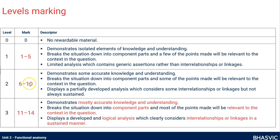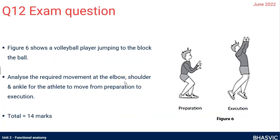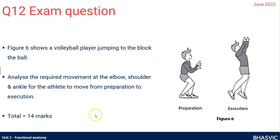Once they've decided what level you're in, they'll determine whether you're at the lower or upper end of that level and give you a grade. Here's an example question: figure six shows a volleyball player jumping to block the ball. On the left they're in the preparatory position on the ground, and on the right they've moved into execution, jumping up to block — arms and legs have changed position. The question says: analyse the required movement at the elbow, shoulder, and ankle for the athlete to move from preparation to execution. It's worth 14 marks.